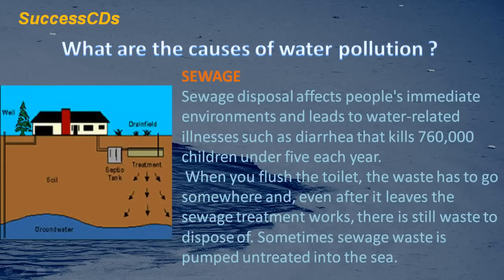Sewage disposal affects people's immediate environments and leads to water-related illness such as diarrhea that kills 760,000 children under 5 each year. When you flush the toilet, the waste has to go somewhere, and even after it leaves sewage treatment works, there is still waste to dispose of. Sometimes sewage waste is pumped untreated into the sea.